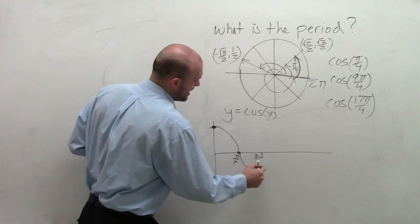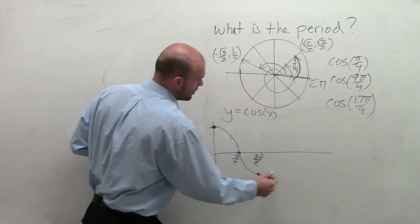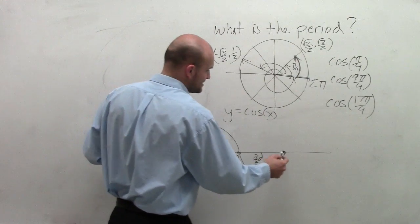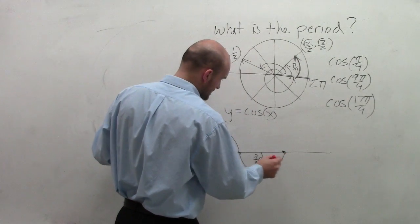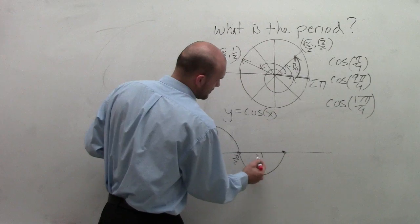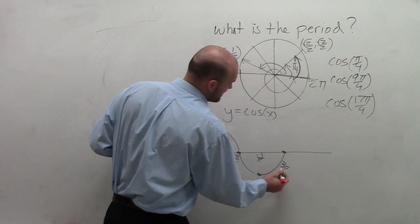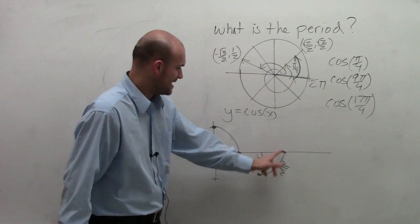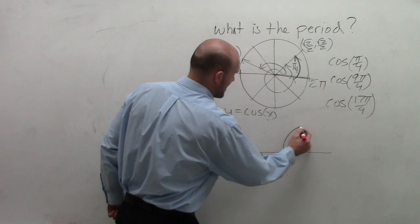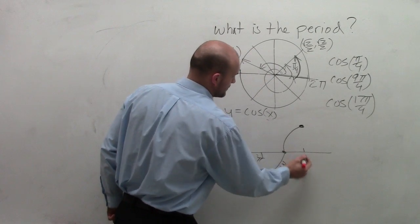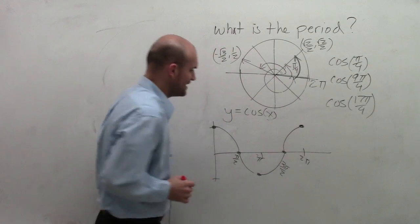Then we go down at 3 pi halves, we're down at negative 1. And then we come back up to 0 at, I'm sorry, that's at pi. And then at 3 pi halves, what we do is we come back up to 0. And then at 2 pi, we're back up to 1 again.